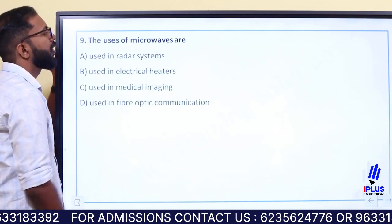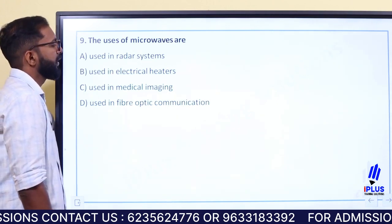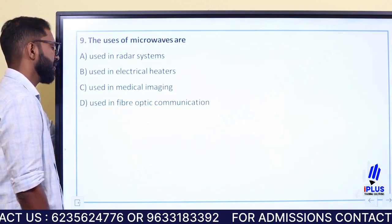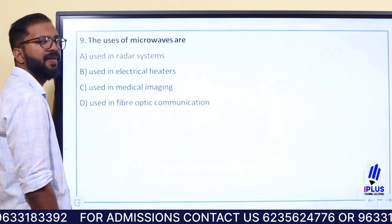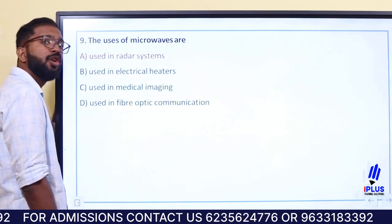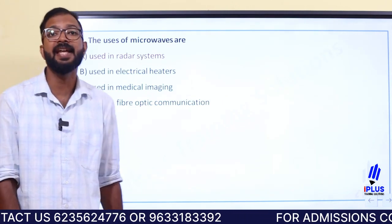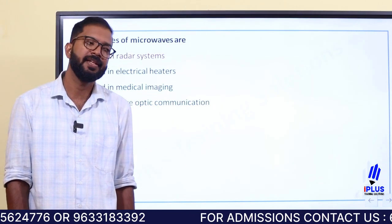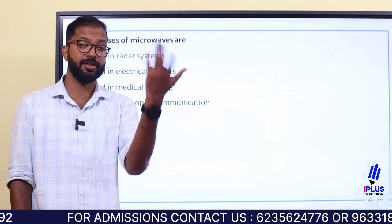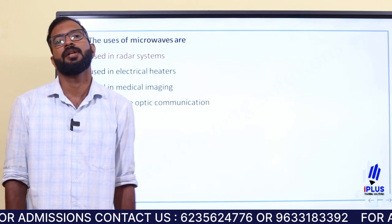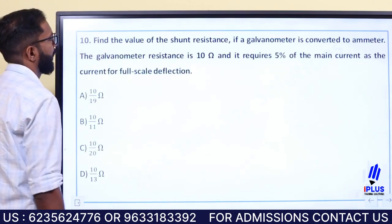The uses of microwaves: microwaves are used in radar systems, used in electrical heaters, used in medical imaging, used in fiber optic communication, and in radio wave and microwave transmission. Microwave antennas are used in the microwave region.